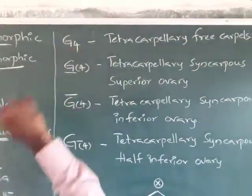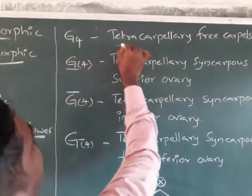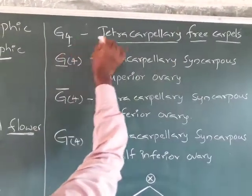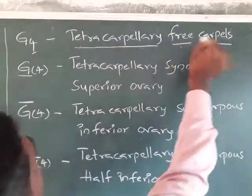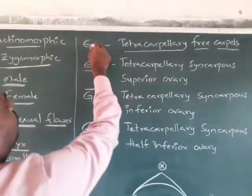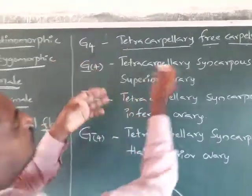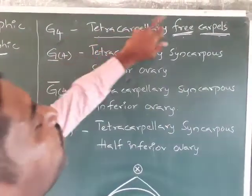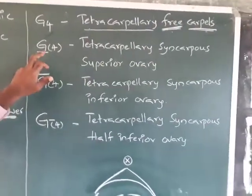G4 indicates tetracarpellary free carpels — four carpels that are free. The number 4 within no brackets means free carpels; if the number is within brackets, it indicates syncarpous carpels (united). G4 without brackets means tetracarpellary free carpels.